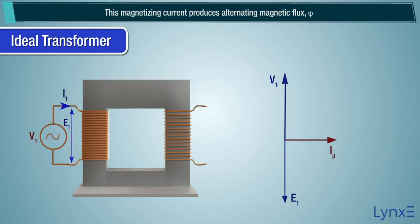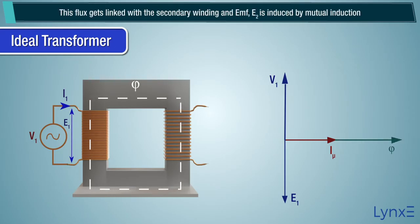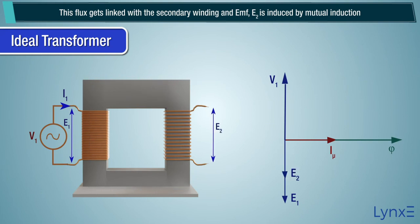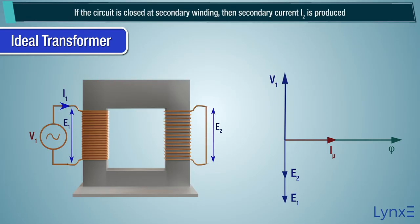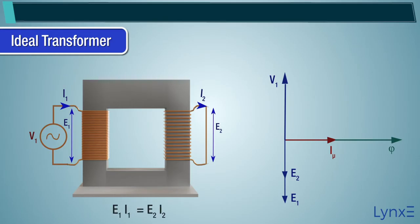This magnetizing current produces alternating magnetic flux phi. This flux gets linked with the secondary winding, and EMF E2 is induced by mutual induction. This E2 is in phase with E1. If the circuit is closed at the secondary winding, then secondary current I2 is produced. That is, E1 multiplied by I1 equals E2 multiplied by I2.